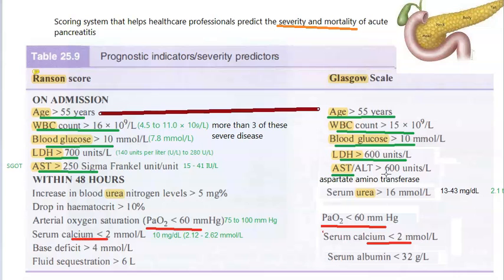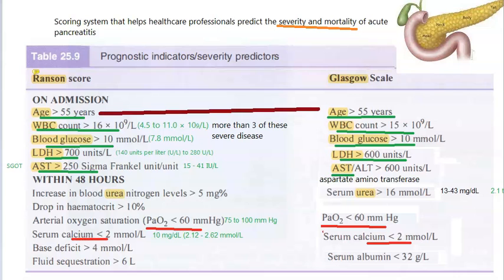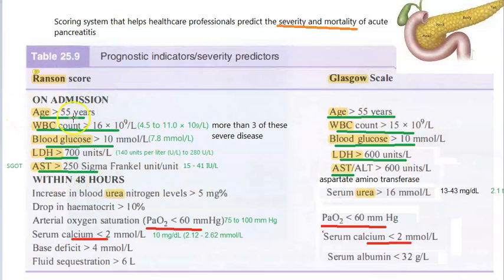On admission, they look at: age greater than 55 years, WBC count being really high, blood glucose level being high, elevated LDH levels, and elevated AST (SGOT, aspartate aminotransferase). If three or more of these criteria are present, it is considered severe disease. These five things can be checked immediately on admission within 24 hours.